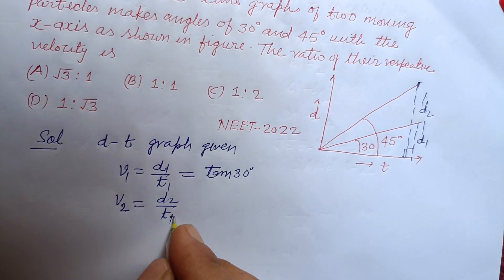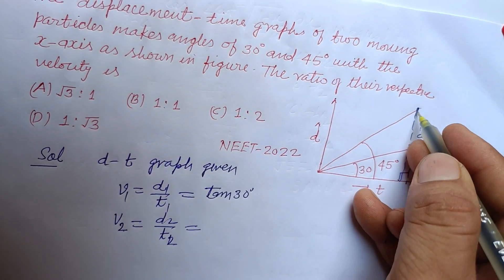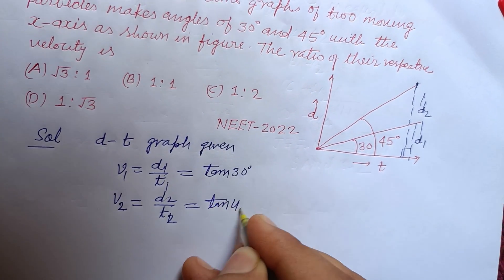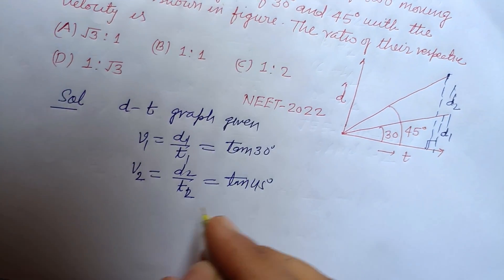So v1 and particle's velocity is v2, so d2 upon time t. Let this is time t1, this is time t2. So what is this? This is perpendicular and this is base, so this is tan 45. Okay, so here v1 upon v2.